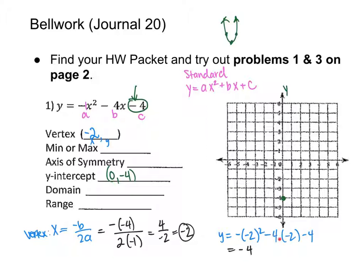On the other side: negative four times negative two is positive eight. So we have negative four plus eight, which gives positive four, minus four, which gives zero. So the vertex is at (−2, 0).